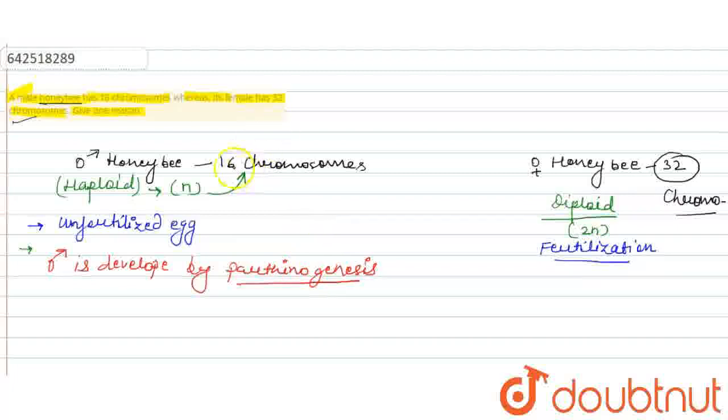So, that is why the honeybee consists of 16 chromosomes and the female honeybee consists of 32 chromosomes, right? So, this is the reason behind it and our answer is complete here.